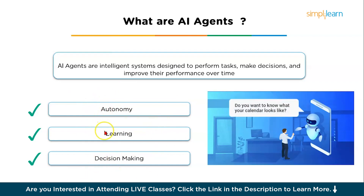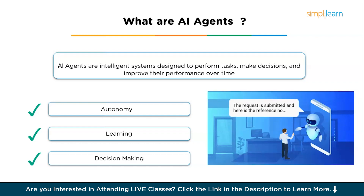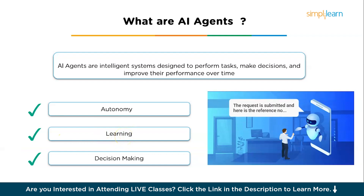AI agents revolve around three things: autonomy, learning, and decision-making. Autonomy is one of the core features — it means these agents are capable of making decisions and taking actions without the need for constant oversight. Once an AI agent is deployed, it can operate on its own, adjusting to new inputs and changing circumstances, just as a human might act based on past experiences.